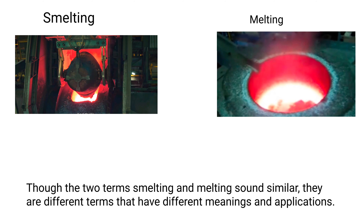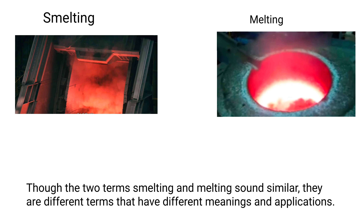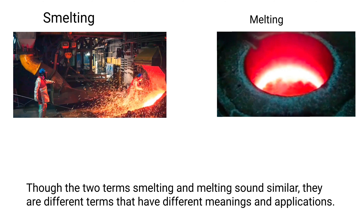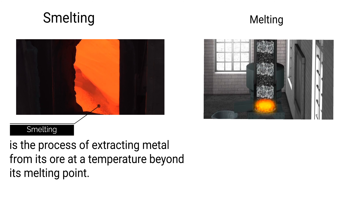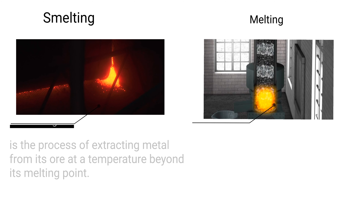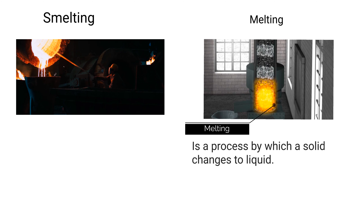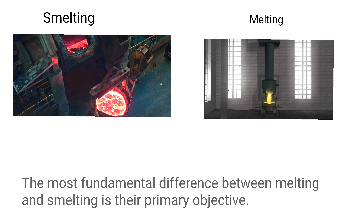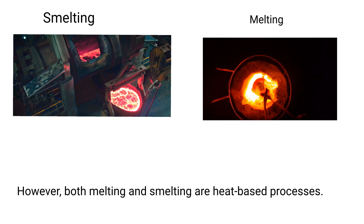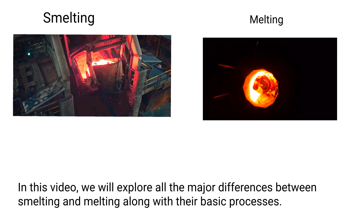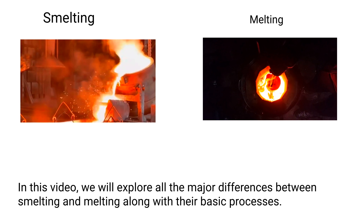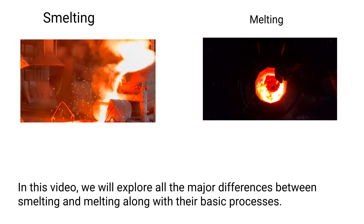Though the two terms smelting and melting sound similar, they are different terms with different meanings and applications. Smelting is the process of extracting metal from its ore at a temperature beyond its melting point, while melting is a process by which a solid changes to liquid. The most fundamental difference between melting and smelting is their primary objective. However, both melting and smelting are heat-based processes. In this video, we will explore all the major differences between smelting and melting along with the basic processes.